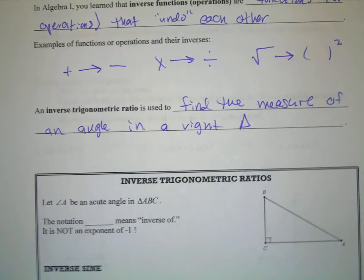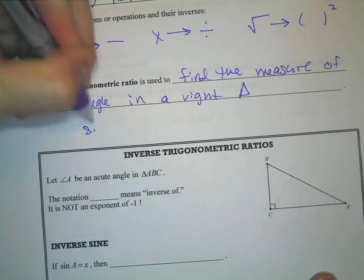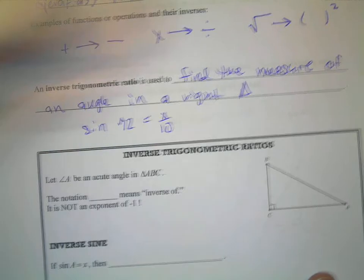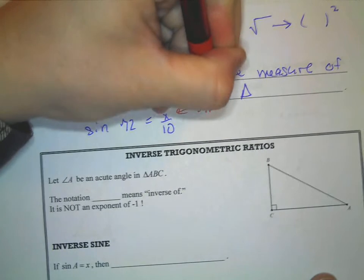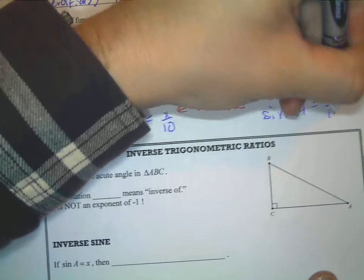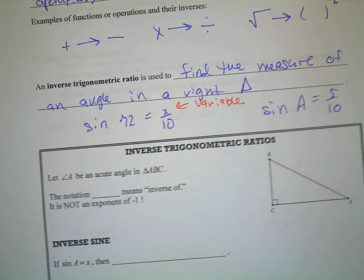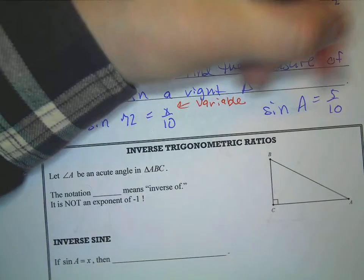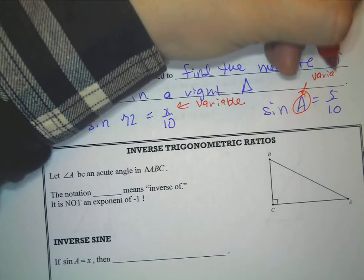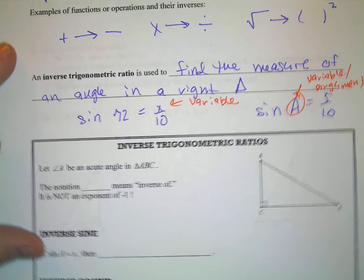I don't have a TI-84 with me, but I can show you using my computer app — I'll cover the calculator in a separate video. For example, when we had sine of 72 equals x over 10, the variable was the missing side. Now it might say the sine of angle A equals 5 over 10, where angle A is the variable we're solving for. That angle is called the argument of the trig function — it's the angle you're taking the sine, cosine, or tangent of.